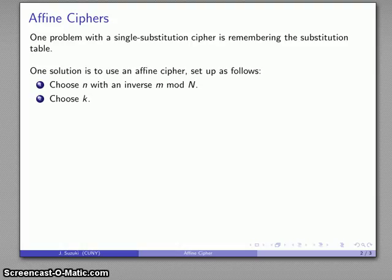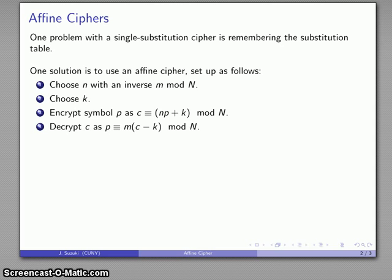We're going to choose some number K. It doesn't really matter what this value of K is. And we're going to encrypt our symbol P using the congruence: our plaintext symbol value times N plus K mod N is going to be our encrypted value. And since N has a multiplicative inverse, then I can decrypt C as P congruent to M times C minus K.